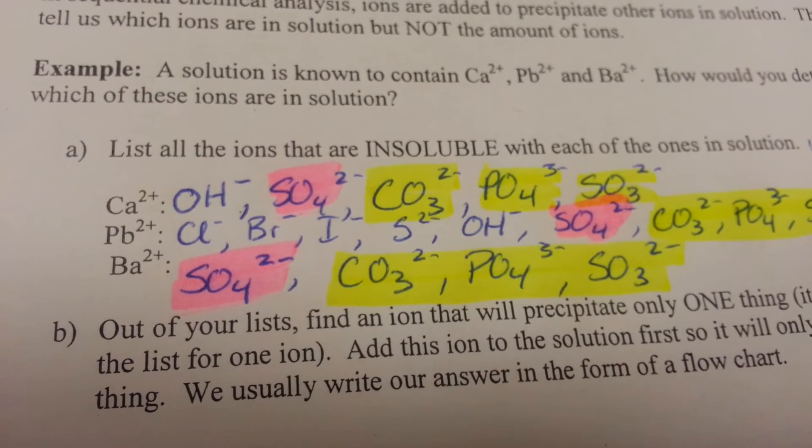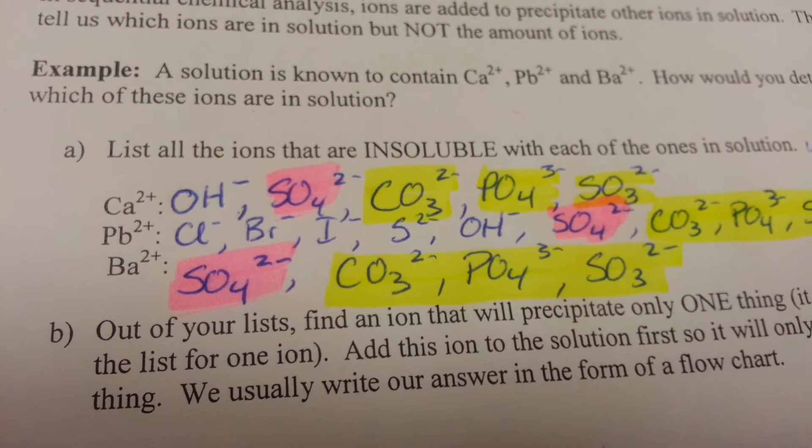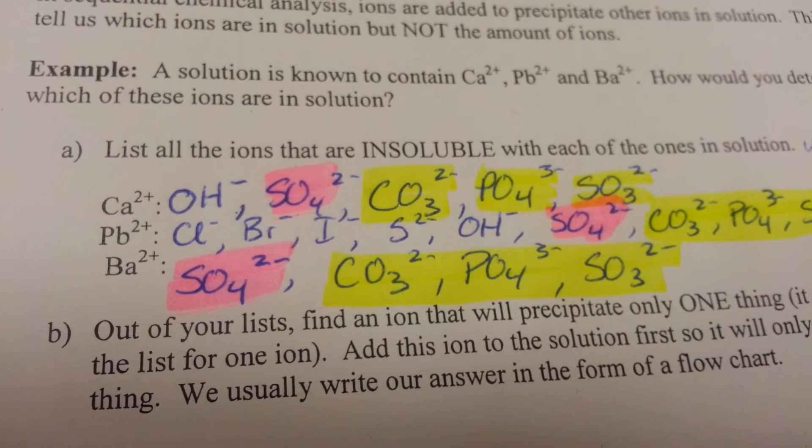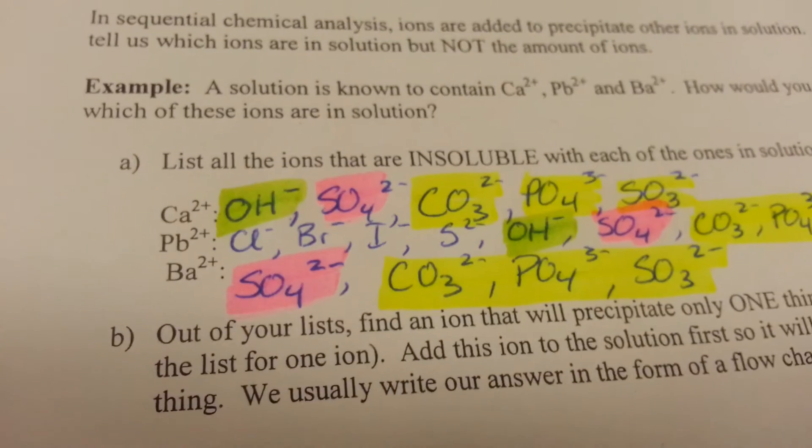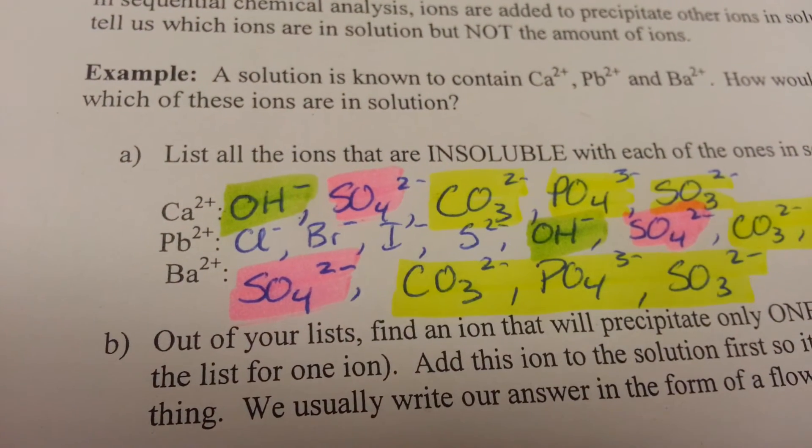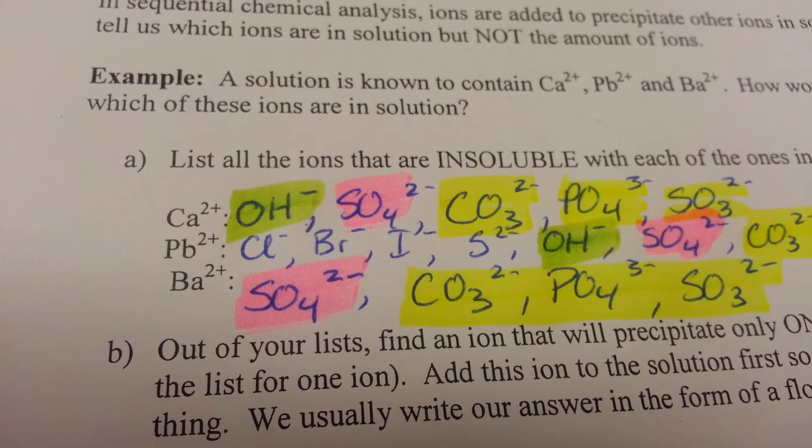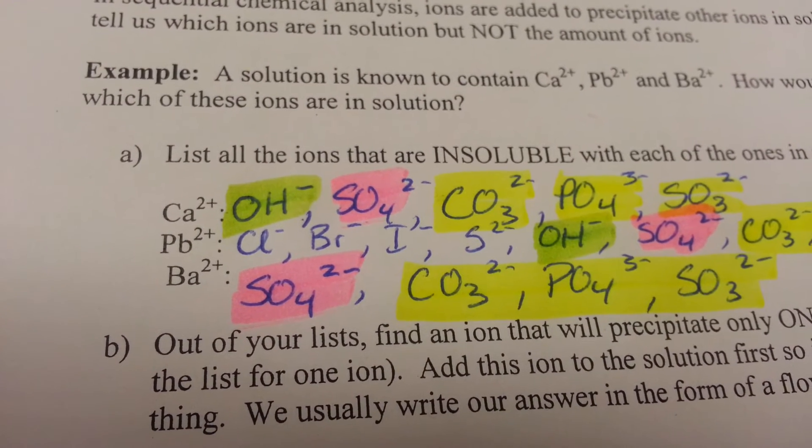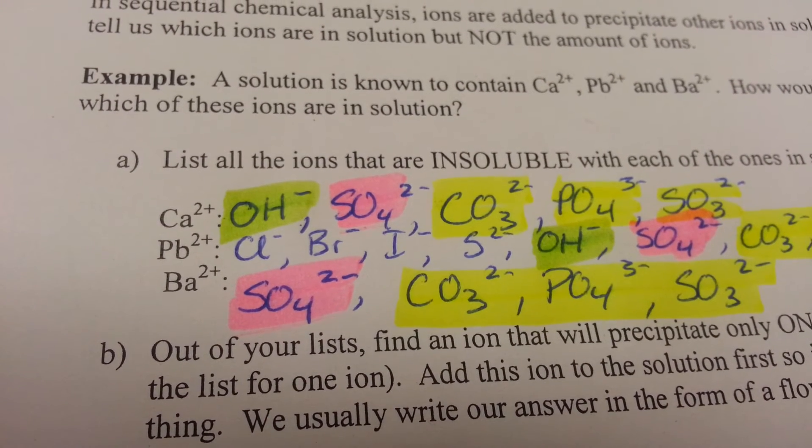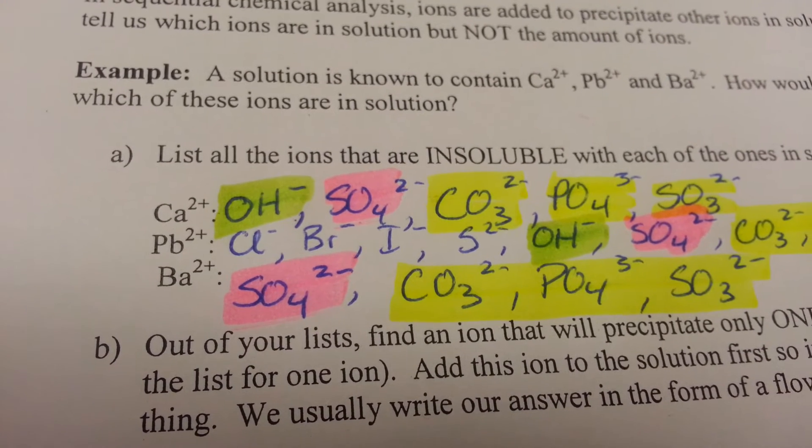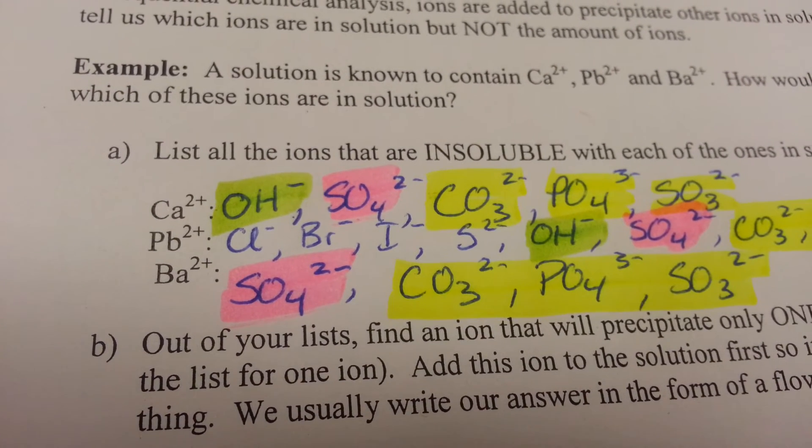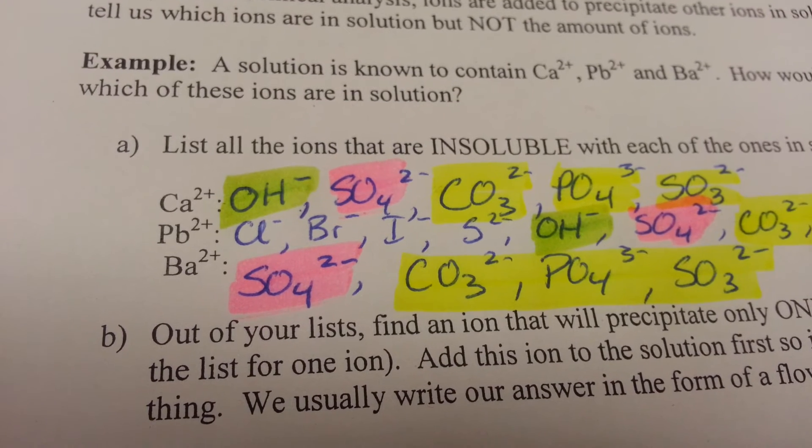We have to identify what is common amongst only one of the type of ions that we have listed. In green, I have furthermore highlighted the hydroxide ions that are common between both the calcium and the lead. We can see that there are chlorine, the bromine, the iodide, and the sulfide are only amongst the lead.